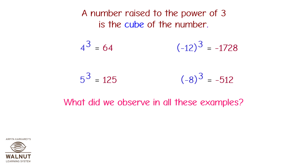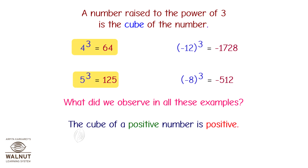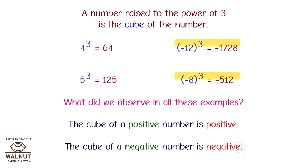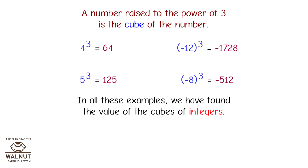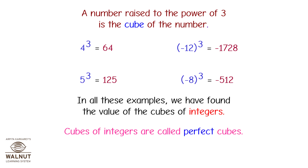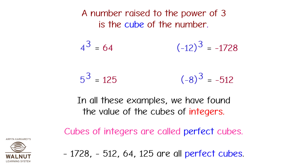What did we observe in all these examples? The cube of a positive number is positive. The cube of a negative number is negative. In all these examples, we have found the value of the cubes of integers. Cubes of integers are called perfect cubes. Minus 1728, minus 512, 64, and 125 are all perfect cubes.